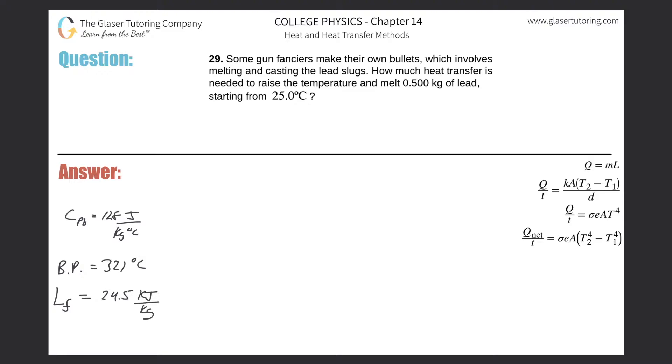Problem 29: Some gun fanciers make their own bullets, which involves melting and casting the lead slugs. How much heat transfer is needed to raise the temperature and melt 0.5 kilograms of lead starting from 25 degrees Celsius?